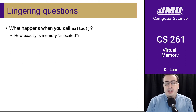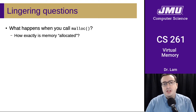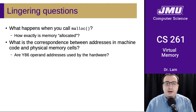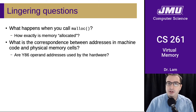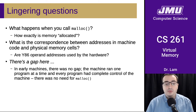I want to start by beginning with this lingering question that you should probably have at this point, which is: what exactly happens when you call malloc? How exactly is memory allocated? And is there actually a correspondence between the addresses in the machine code — like in Y86 — and the physical memory cells? The reality is that those are not one for one. There is a gap, and there's a gap in what we've talked about as well.